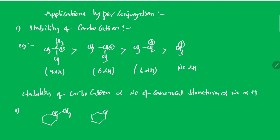Another example: which is more stable? Tertiary, secondary, or primary carbocation? As per alpha hydrogens: 3+2+2+2 = 7 here, only 4 here, only 1 here. So the one with seven alpha hydrogens is the most stable.